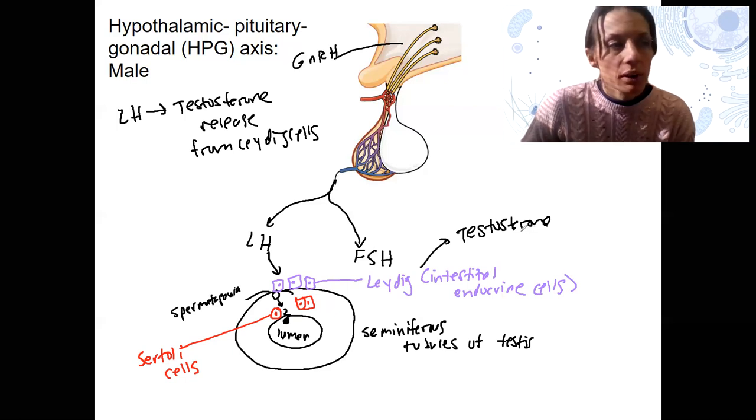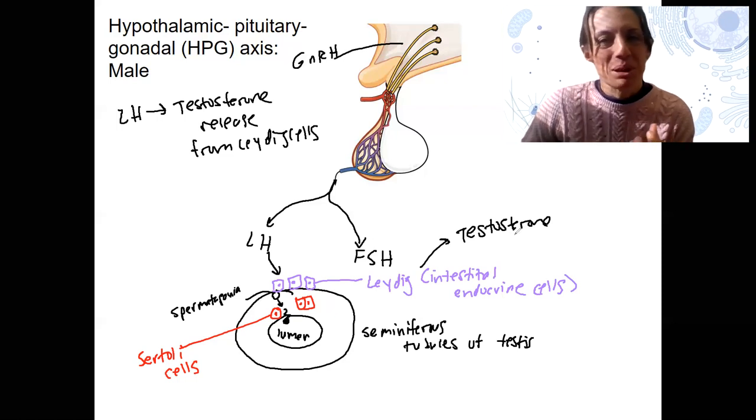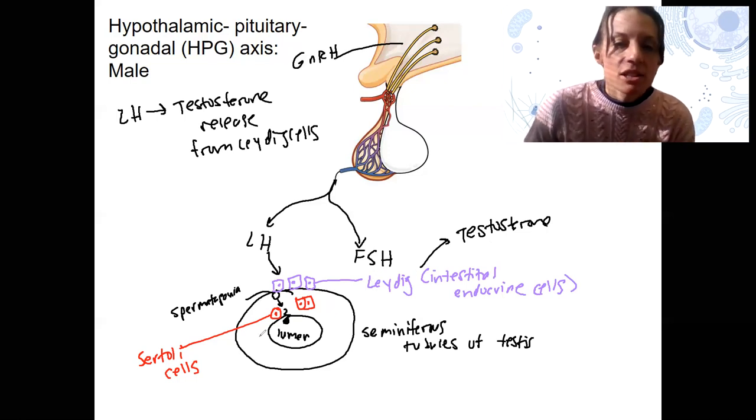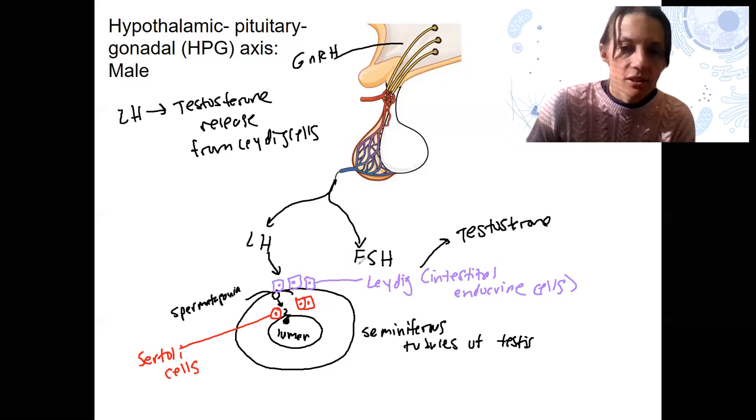Follicle stimulating hormone, so think follicle. That's like a thing that supports something. When we get to female anatomy, this name will be even more clear. Female eggs develop in a follicle. So the male equivalent to egg development is sperm development. These supporting cells are kind of similar to the female follicle supporting cells.